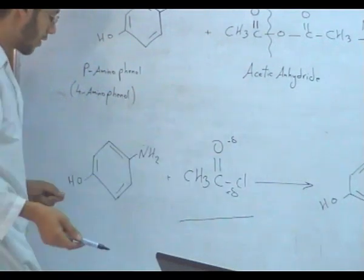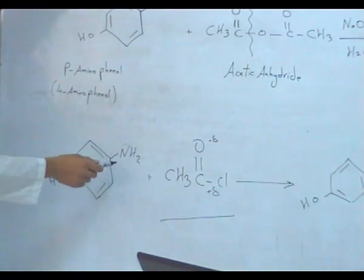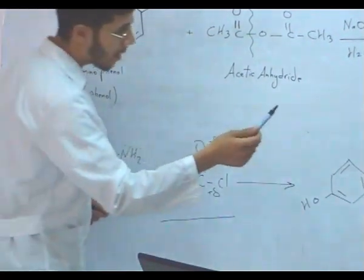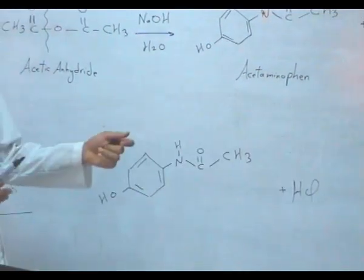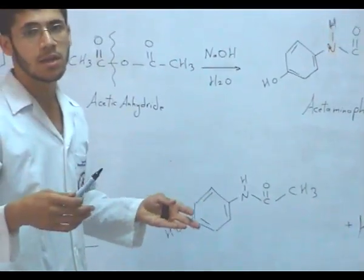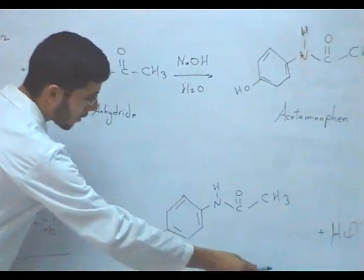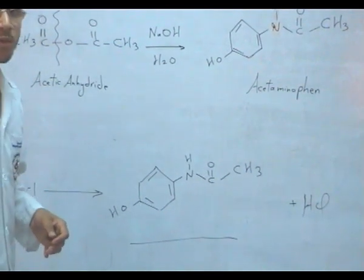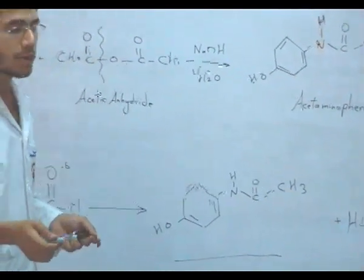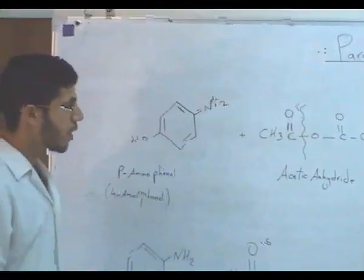So we prefer to use acid chloride rather than acetic anhydride. Because the byproduct we get here is HCl, or hydrochloric acid, which can be easily removed by washing with cold water, while this product will not dissolve in water. So this is the benefit of using acid chloride.